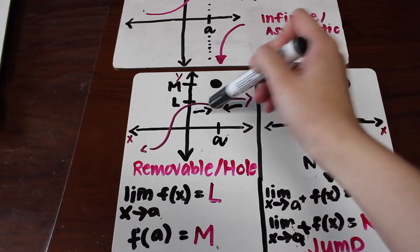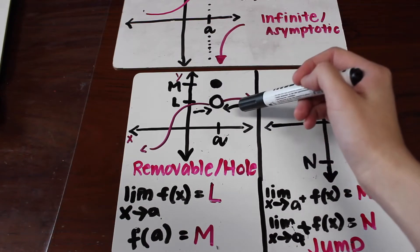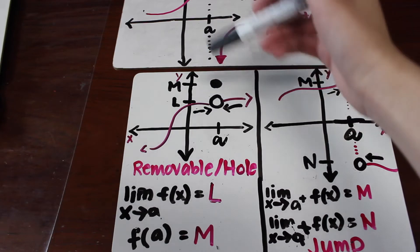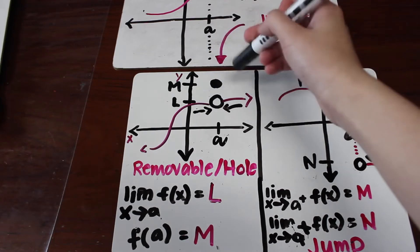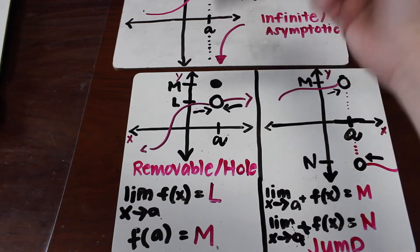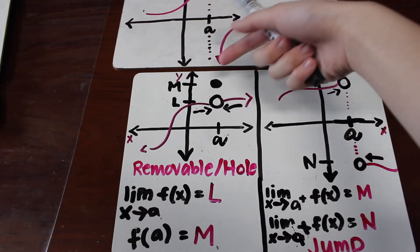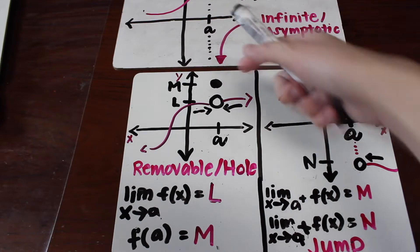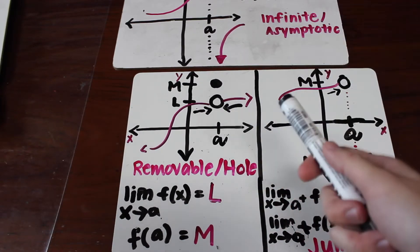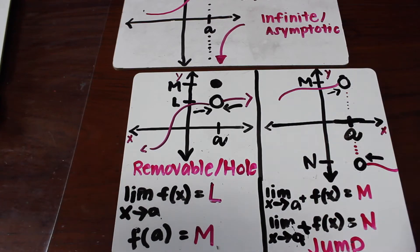I will be discussing the removable or hole discontinuity first. As x approaches a, f of x equals the value L. But if you notice that plugging a into the function gives a different value, the limit exists but the value at that point is different, which makes it a removable or hole discontinuity.